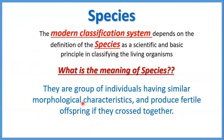They are a group of individuals having similar morphological characteristics — يعني صفات خارجية، هما من شكلهم من برة شبه بعض. And they produce fertile offspring — يعني when they mate بيدوا babies، والbabies دول بيبقوا fertile، يعني able to reproduce، ويدوا living organisms of the same kind.